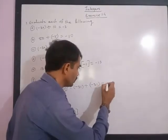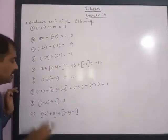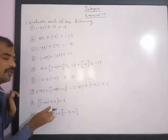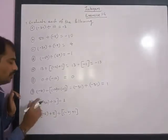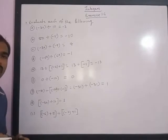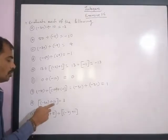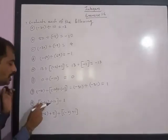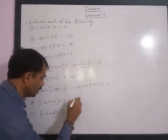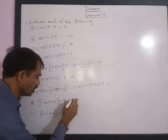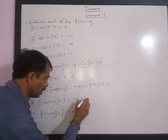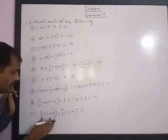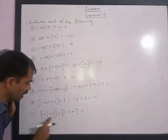We have already studied that if the same integer divides the same integer, the answer is always 1. Next is negative 36 divided by 12. If a negative integer is divided by a positive integer, we divide the whole number by the whole number and give the negative sign. So 36 divided by 12 is 3, and giving the negative sign, the answer is negative 3.